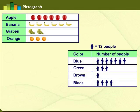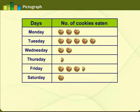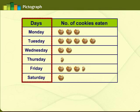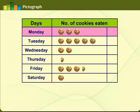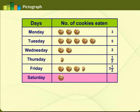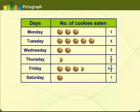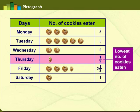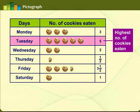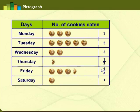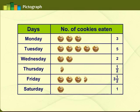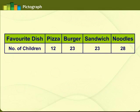Let us learn how to represent data in pictographs. A pictograph uses pictures or symbols to represent the frequency of data. Observe the graph — it contains information about the number of cookies eaten by Mary in six days of the week. The data shows: Monday three, Tuesday five, Wednesday two, Thursday half, Friday three and a half, Saturday one. The lowest number was on Thursday — only half — and the highest was on Tuesday — five cookies.